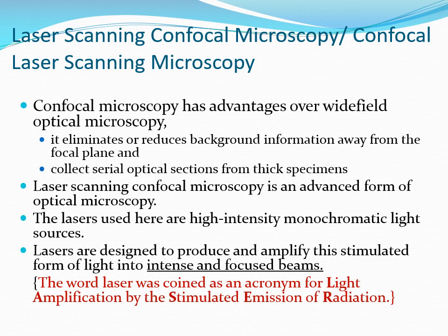Confocal microscopy is used to obtain very sharp images. For this, immunofluorescence tagging is done to focus and demarcate the exact point in the specimen that we want to study. This confocal microscopy collects serial optical sections from the thick section itself — that is, multiple layers of specimens can be imaged using confocal microscopy.